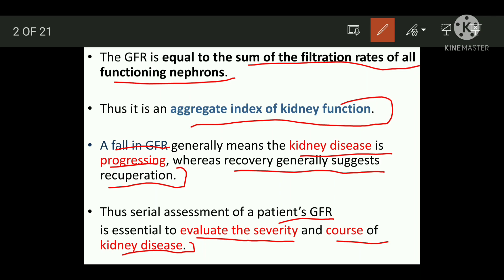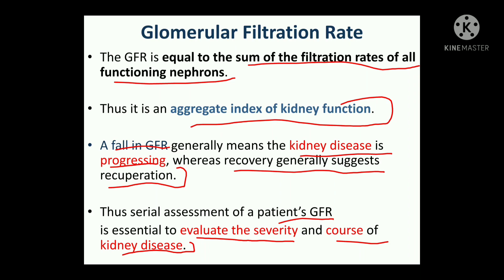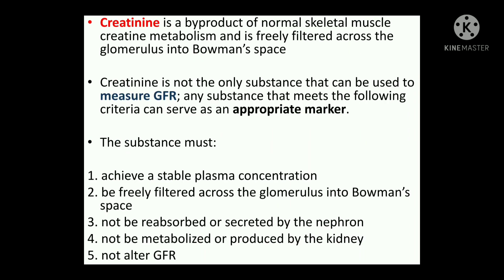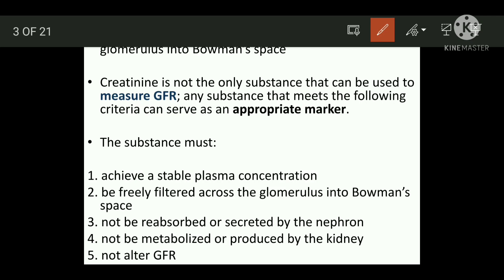So this GFR can be used as an index. The substances used to calculate GFR are creatinine and inulin. Creatinine is a byproduct of normal skeletal muscle creatinine metabolism and is freely filtered across the glomerulus into the Bowman space. It is not only a substance used to measure GFR — it also meets the following criteria for an appropriate marker.